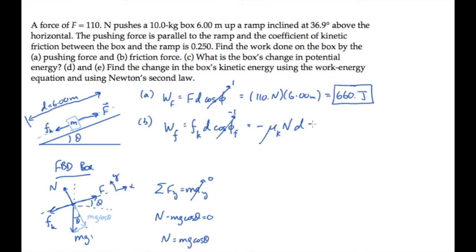Substituting that expression along with all of the known numbers, we calculate to find that friction does negative 118 joules of work.